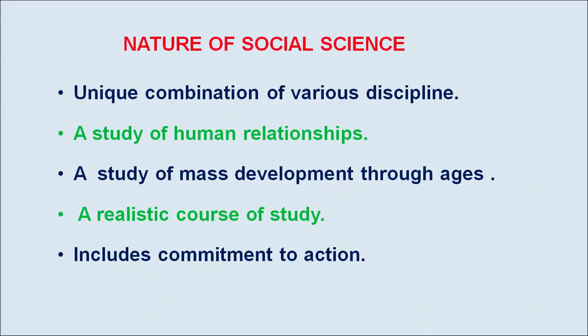Now we come to the nature of social science. The first one is about the unique combination of various disciplines. Though social science is treated as a separate subject, it encompasses diverse concerns of society and includes a wide range of content drawn from the disciplines of history, geography, economics, political science and sociology.